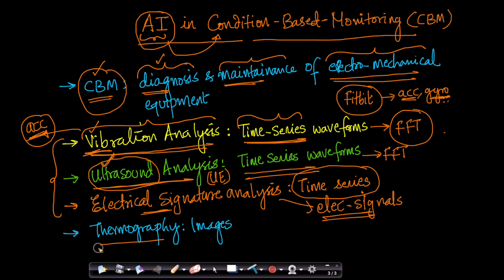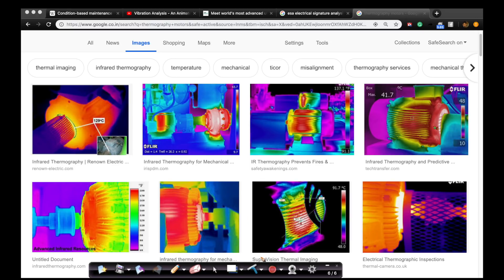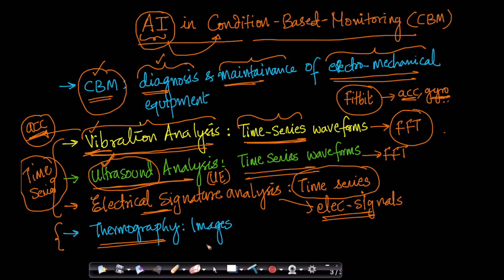The fourth technique, very interestingly, is called thermography. In thermography, what you get is basically images. Thermography measures how hot equipment is using infrared cameras. Suppose you look at a motor that is running — this is the image you get. The redder something is, the hotter that part is. So in thermography, what you get is basically images.